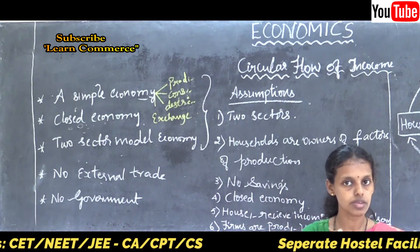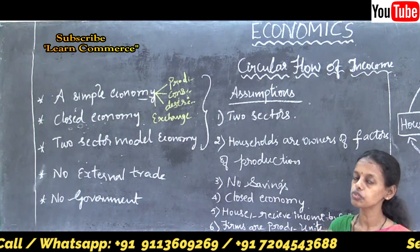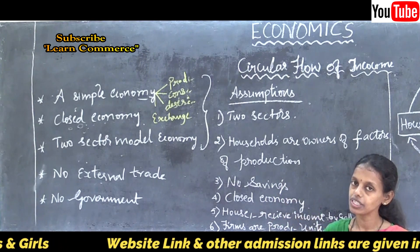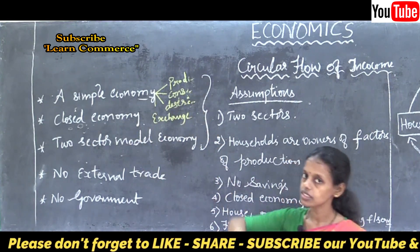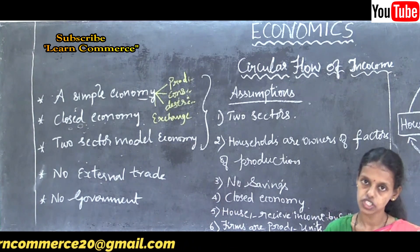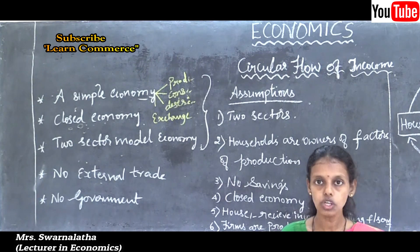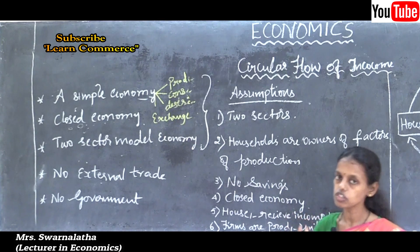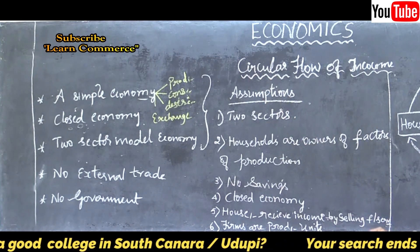The firm supplies goods to the household and the household makes payments for them. The household also supplies raw materials to the firm, and the firm makes factor payments in return — which is income for the households. Households purchase goods, which is spending, and that spending is income for the firms. In this manner, income is created in the economy in a circular flow. There is no external trade and no government intervention in a simple economy.